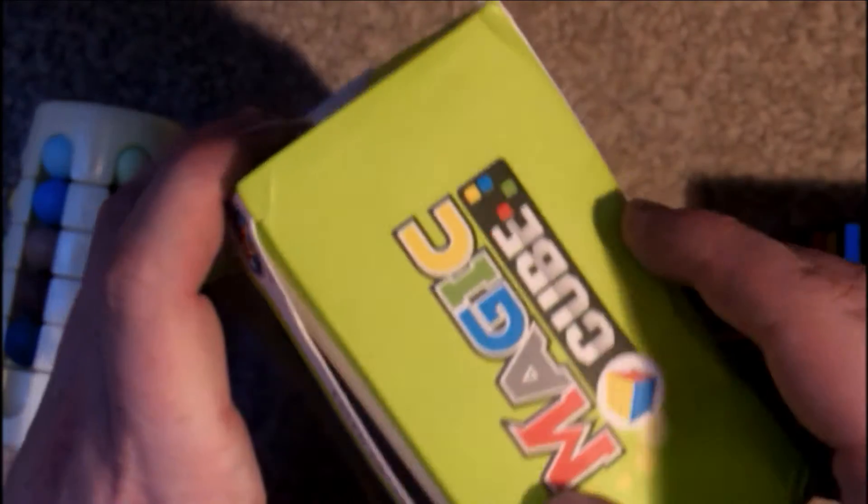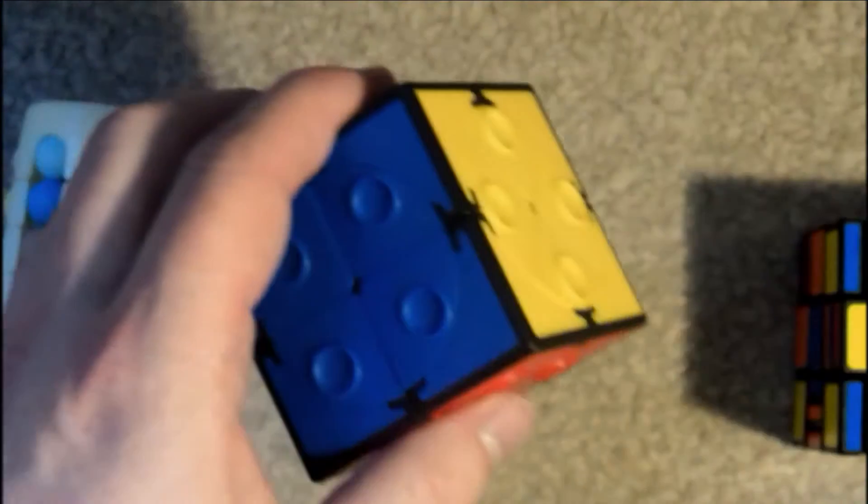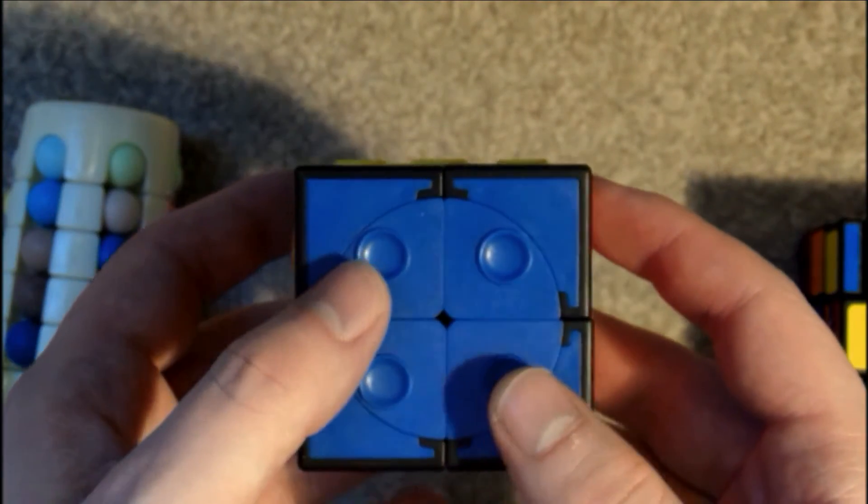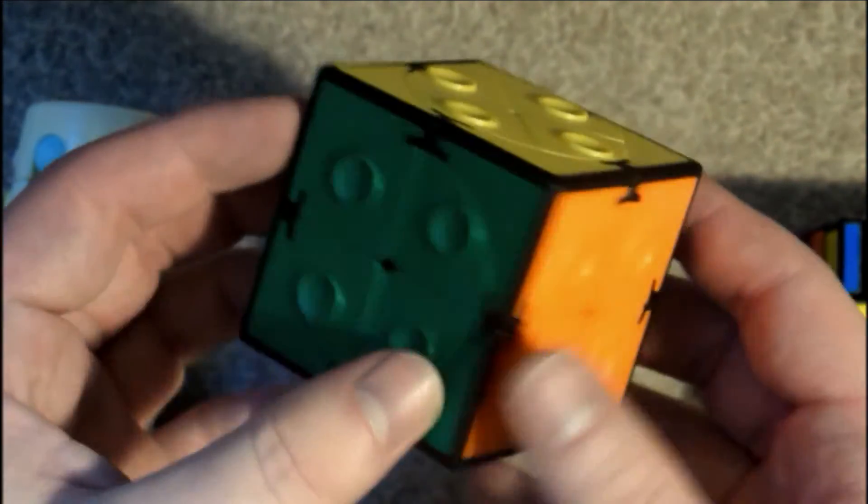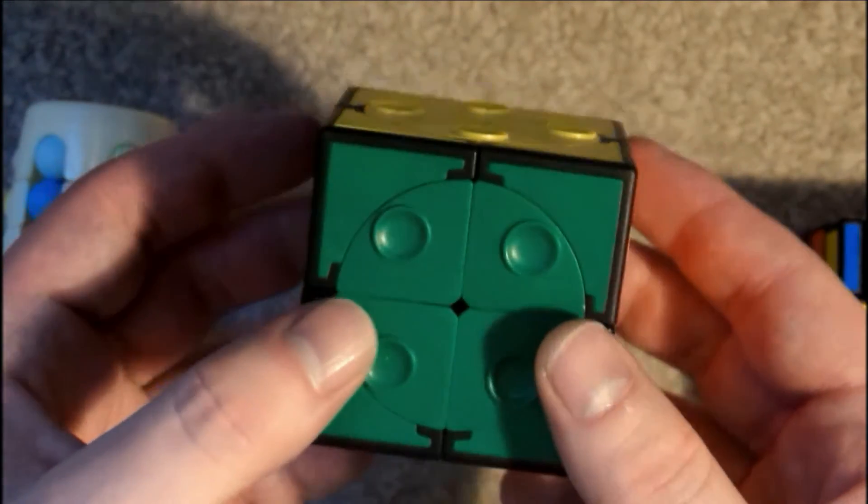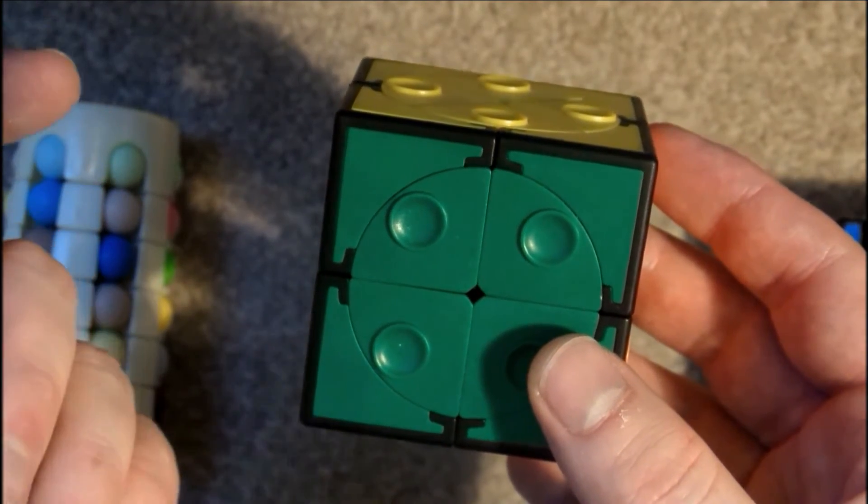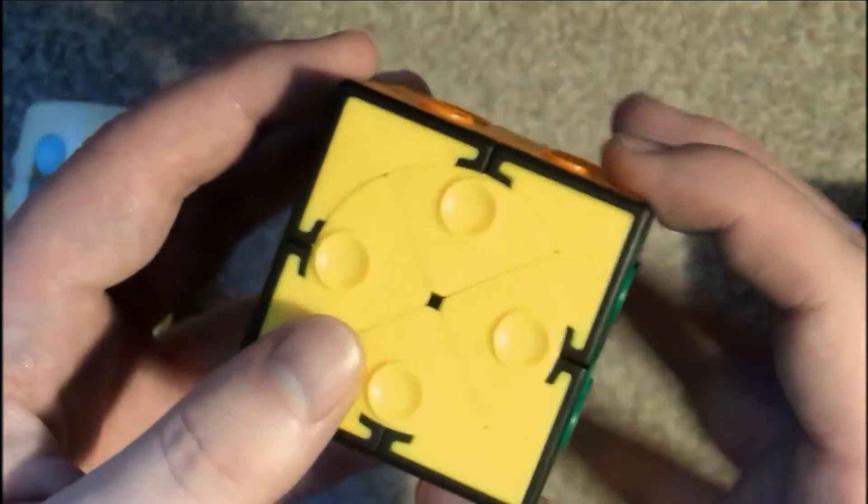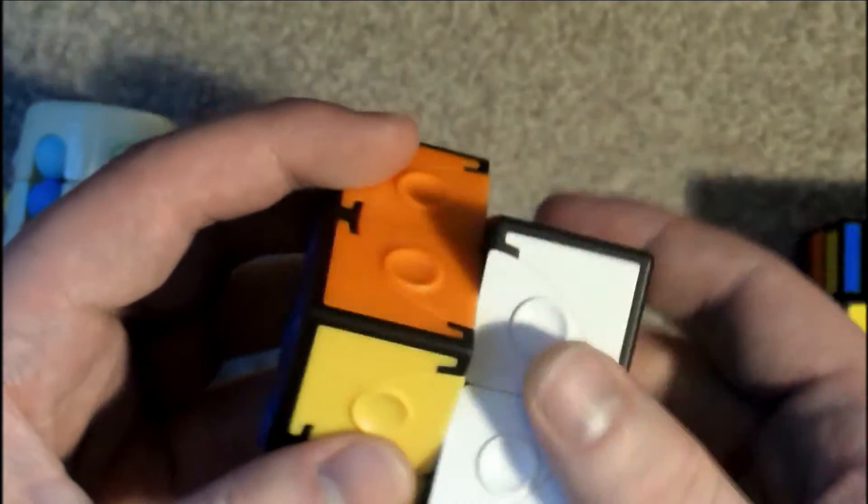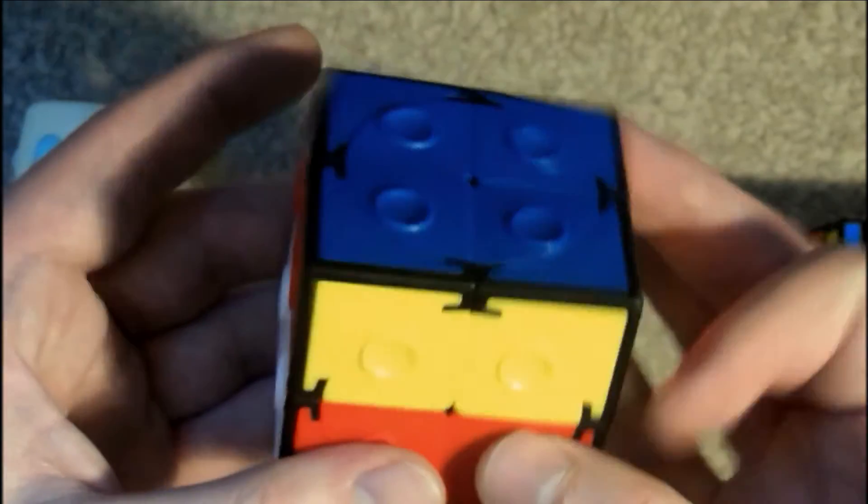Okay so let's open this up. So I do already have the Shengshou Crazy 2x2x4 I think it's called. And my thinking is that this Crazy 2x2 should be different to solve than the 2x2 part on the Shengshou Crazy 2x2x4. I could be wrong and if I am wrong then I've just wasted my money on this.